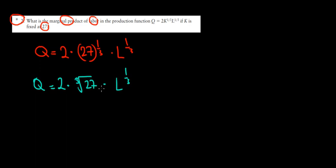3 times 3 is 9, 9 times 3 is 27. So third root of 27 is going to be 3.